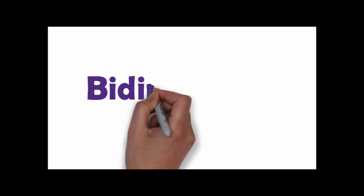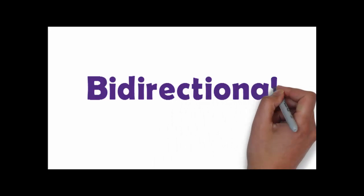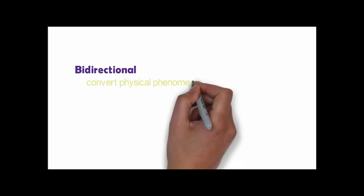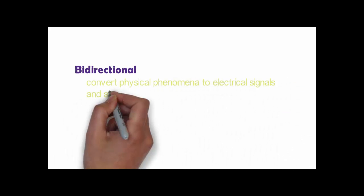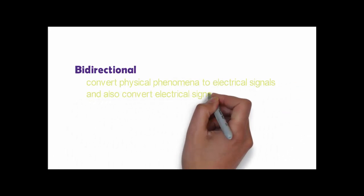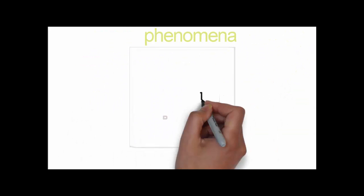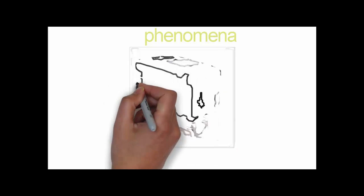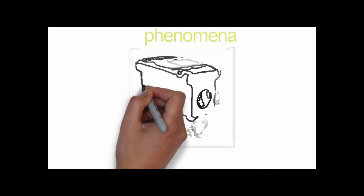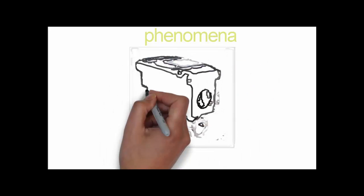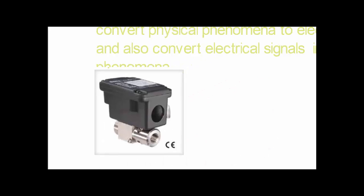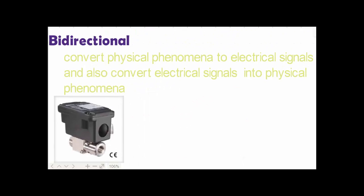Now coming to bidirectional transducers. As the name suggests, a bidirectional transducer converts physical phenomena to electrical signals and also converts electrical signals into physical phenomena. The best example is an antenna, which converts conducted electrical signals to propagating electromagnetic waves and vice versa. Here is how a bidirectional transducer looks like.